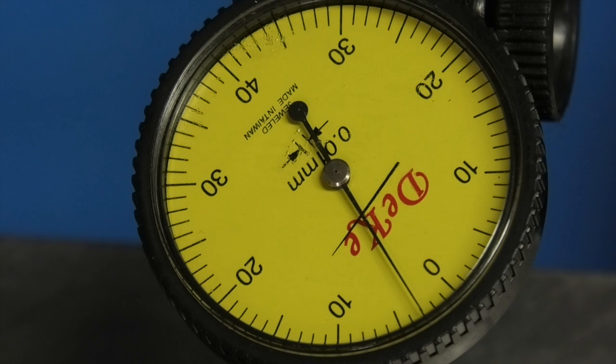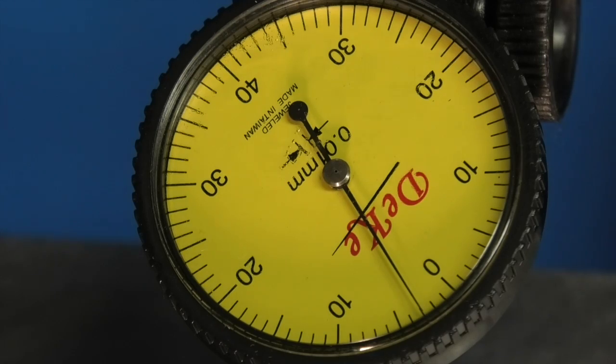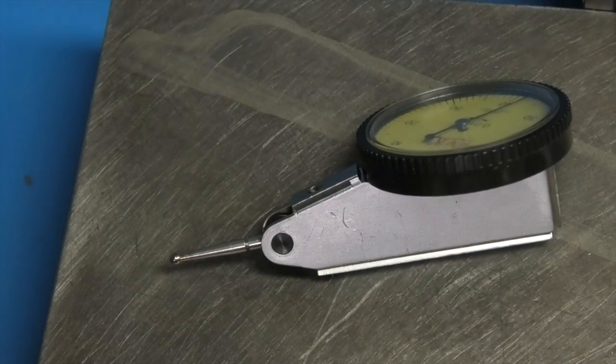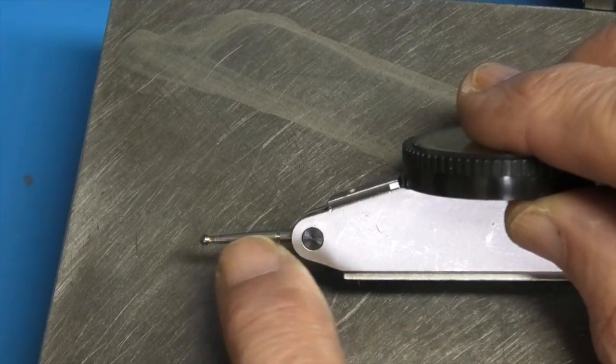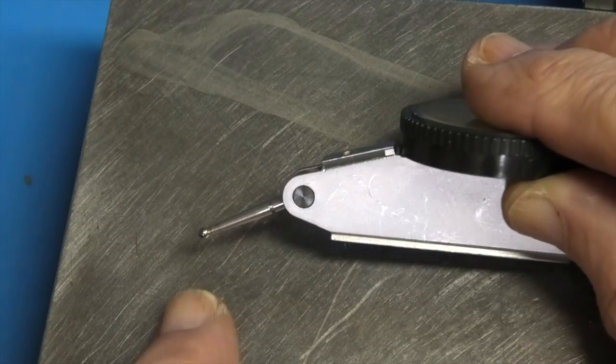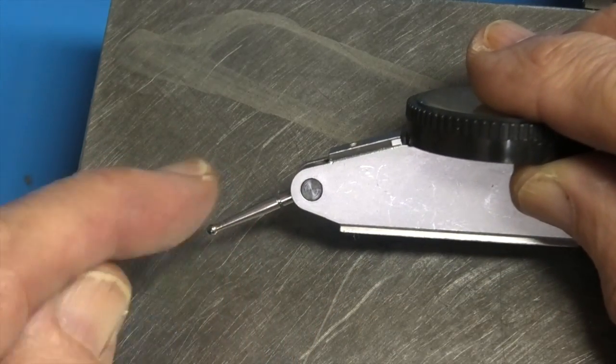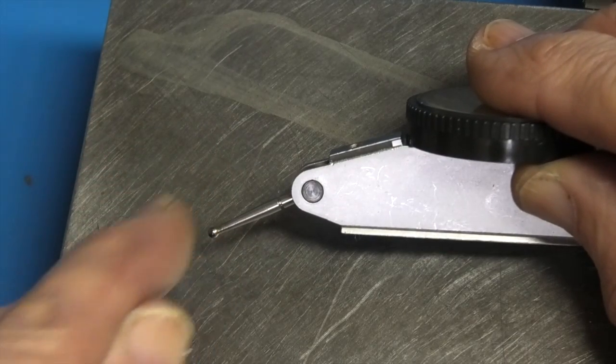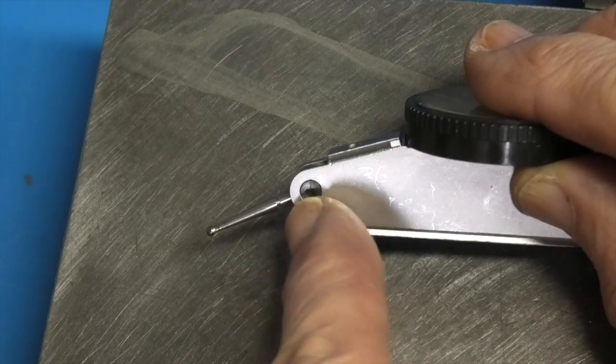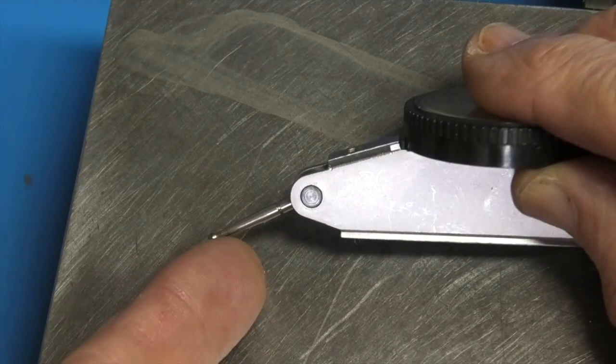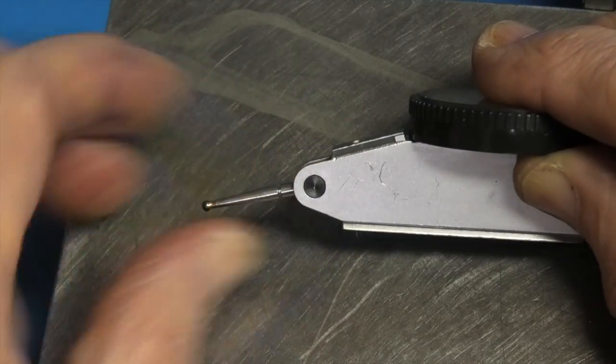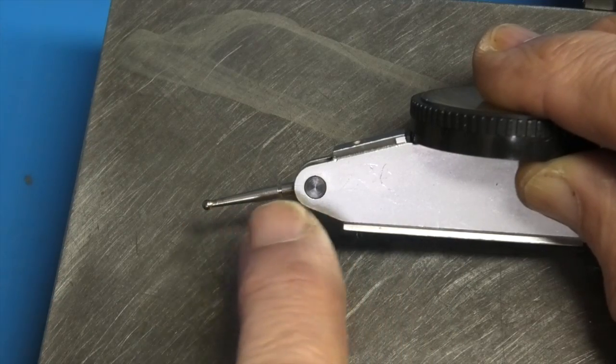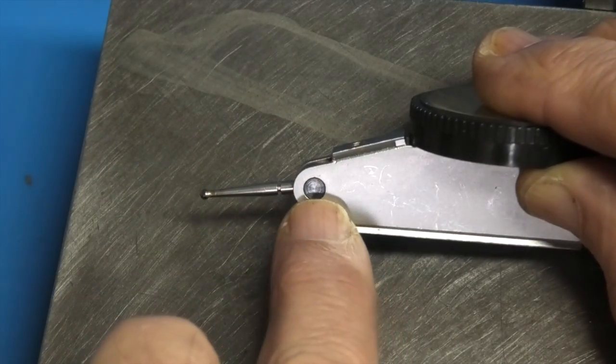Now it's important on these dial indicators that they're held parallel virtually to the part that you're trying to measure. On these indicators you get the most accurate reading when this is parallel. If I've got it set down like that because you're bringing this, imagine that's a radius, you're coming in closer to the pivot point. So the distance is shortened so you lose accuracy on the pivot. So the straighter you have this to the centre line the more accurate you will be with your reading.